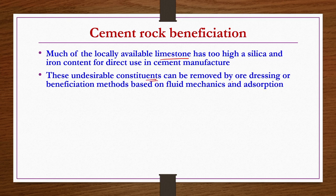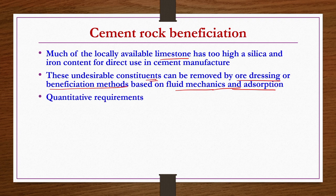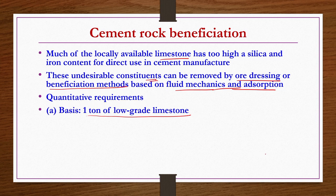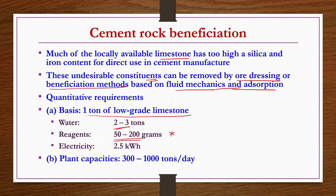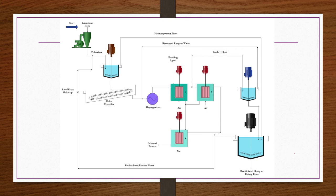Undesirable constituents can be removed by ore dressing or beneficiation methods based on fluid mechanics and absorption. Quantitative requirements: to beneficiate 1 ton of low-grade limestone, 2 to 3 tons of water are required, 50 to 200 grams of reagents, and 2.5 kilowatt-hours of electricity. Plant capacities usually vary between 300 and 1000 tons per day. The limestone rock is typically crushed and ground to a required size suitable for Portland cement production.